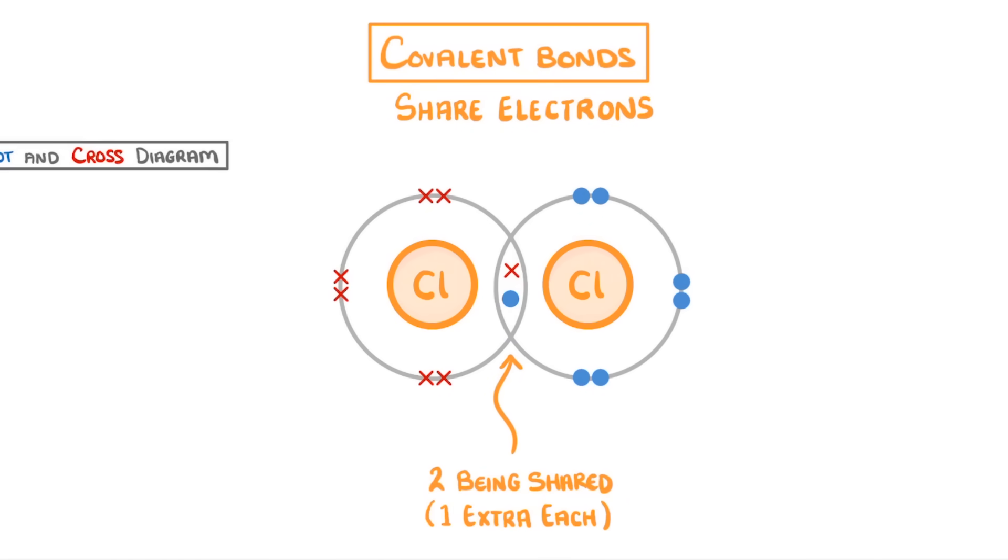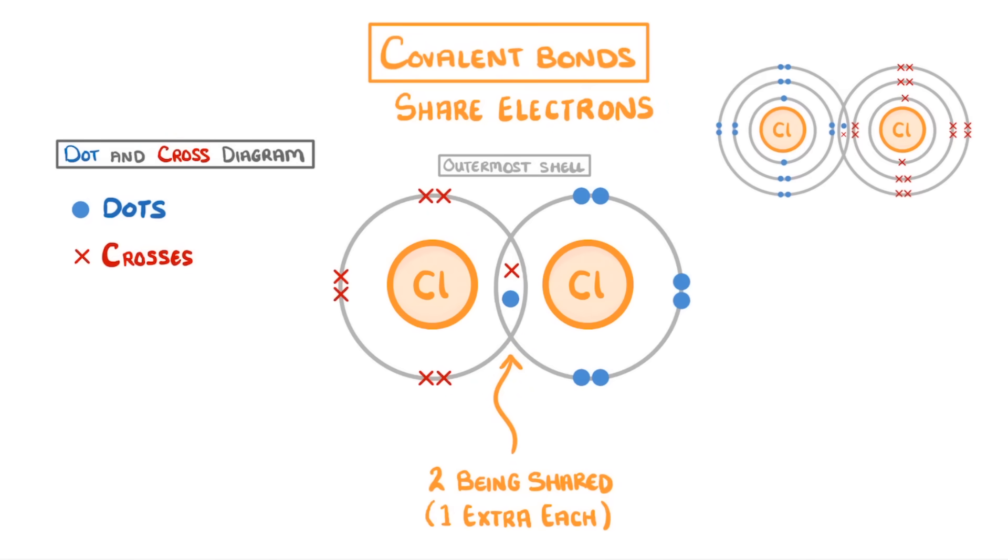The way that we've drawn this is called a dot and cross diagram, and when you do these you need to make sure that you draw one of the atoms with dots, and the other with crosses, so that we can tell which electrons belong to each. Also, even though we've only drawn the outermost shell of each atom here, you might sometimes have to draw all of the shells. Just make sure you check the question to see what they want.